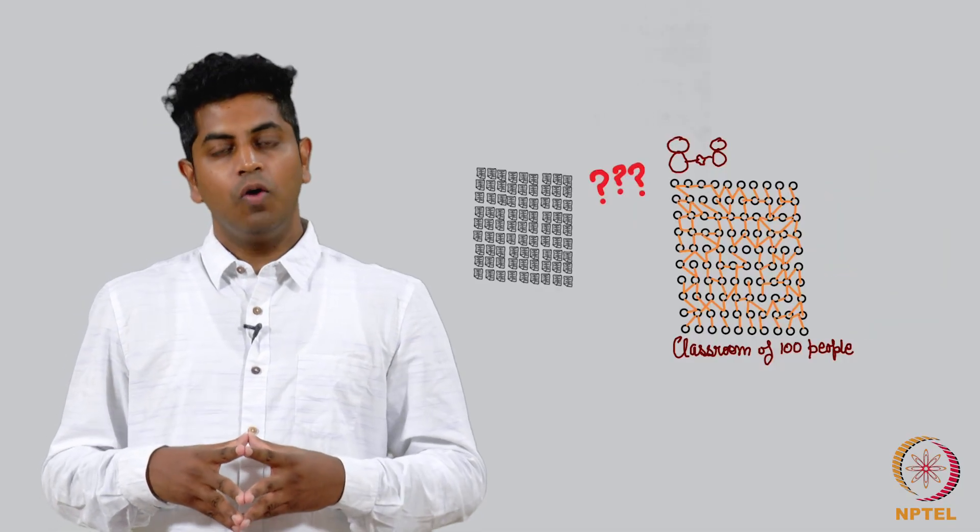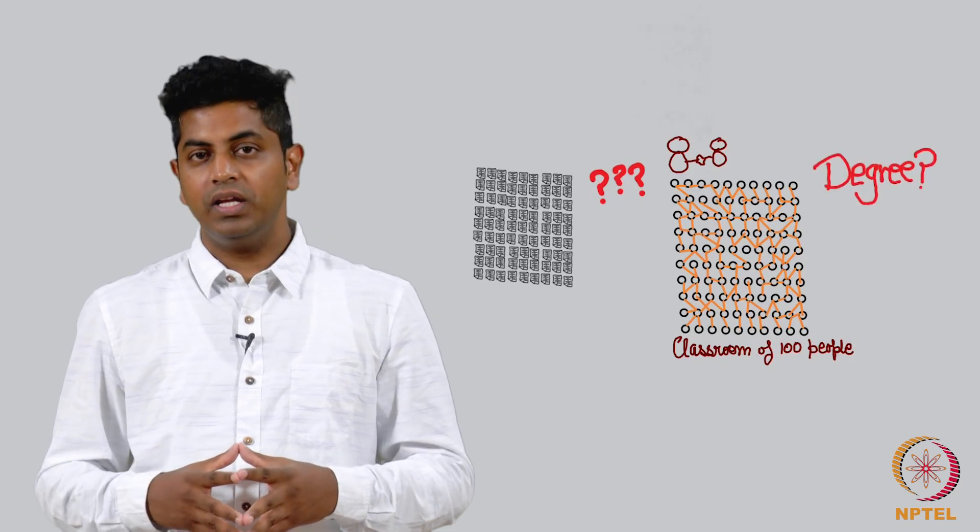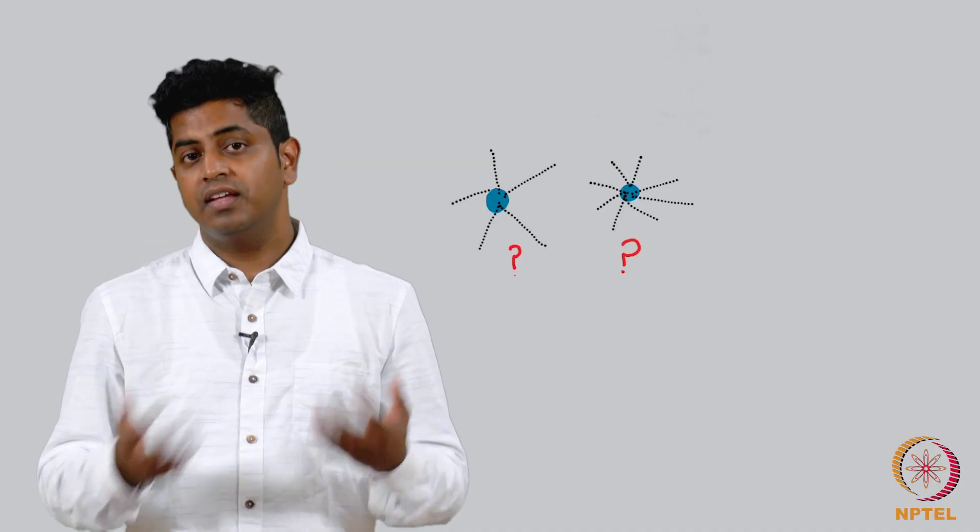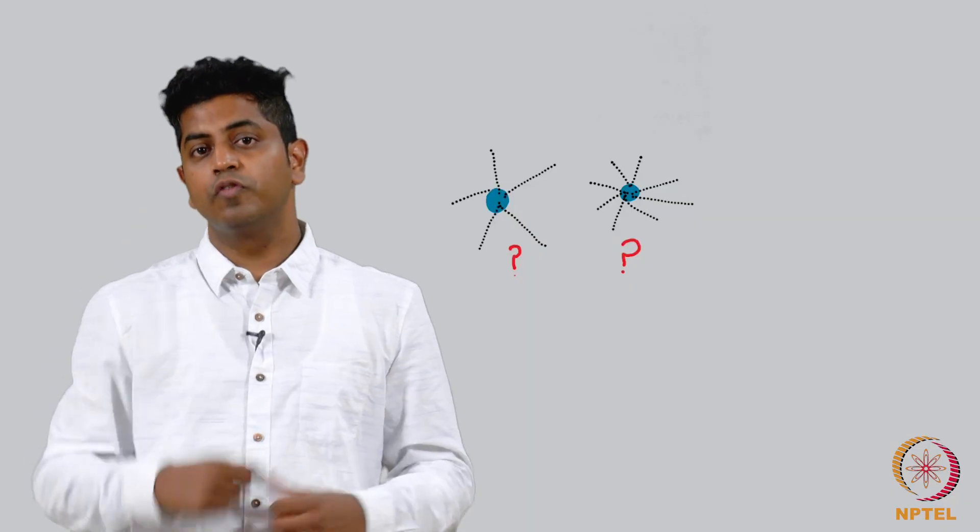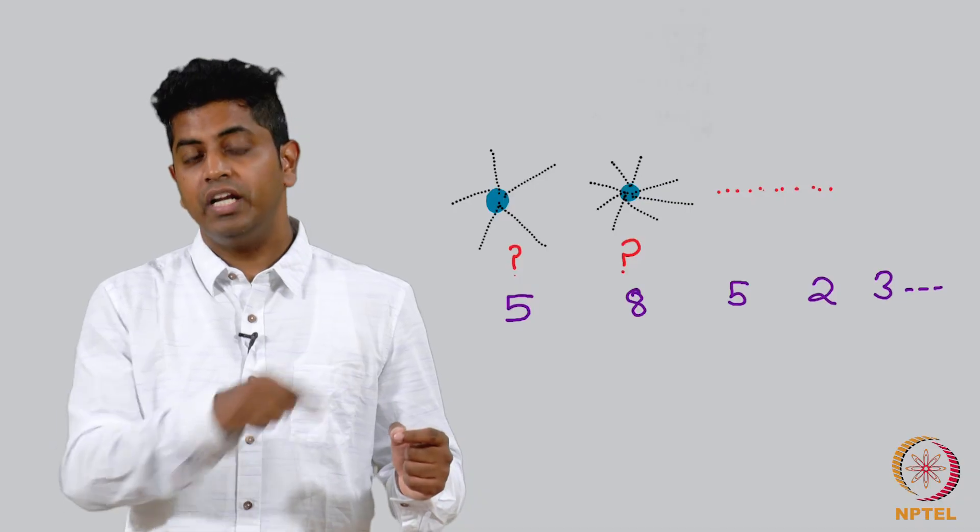Second question: what can you say about the degree of the nodes? By degree you mean pick a person, look at how many friends he has. Pick another person, look at how many friends he or she has, and so on. Make a list of all these friendships of individual people.